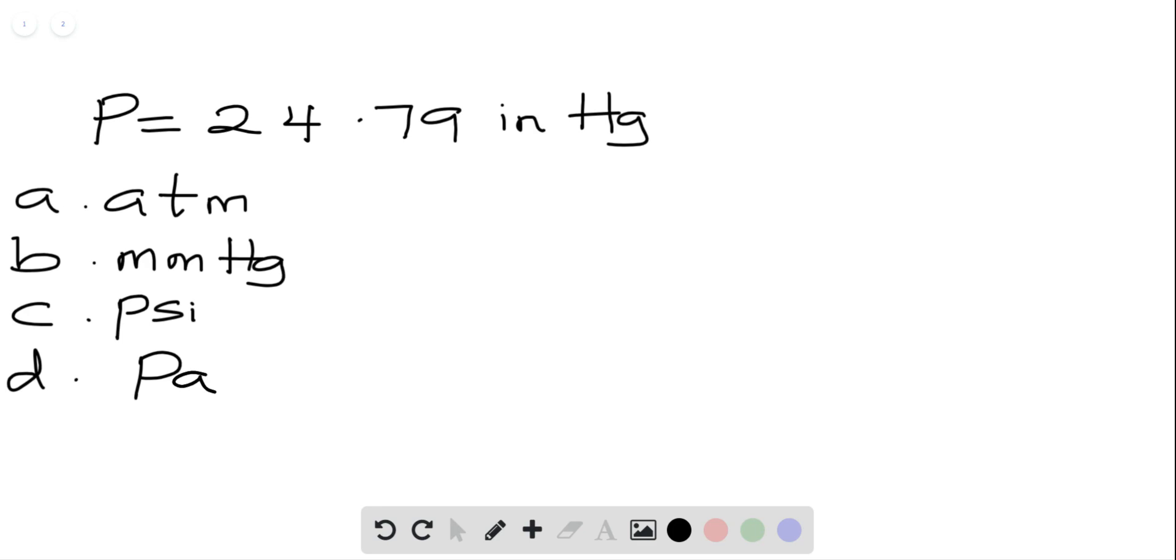So, one inch mercury is equals to 0.03342 atmosphere.